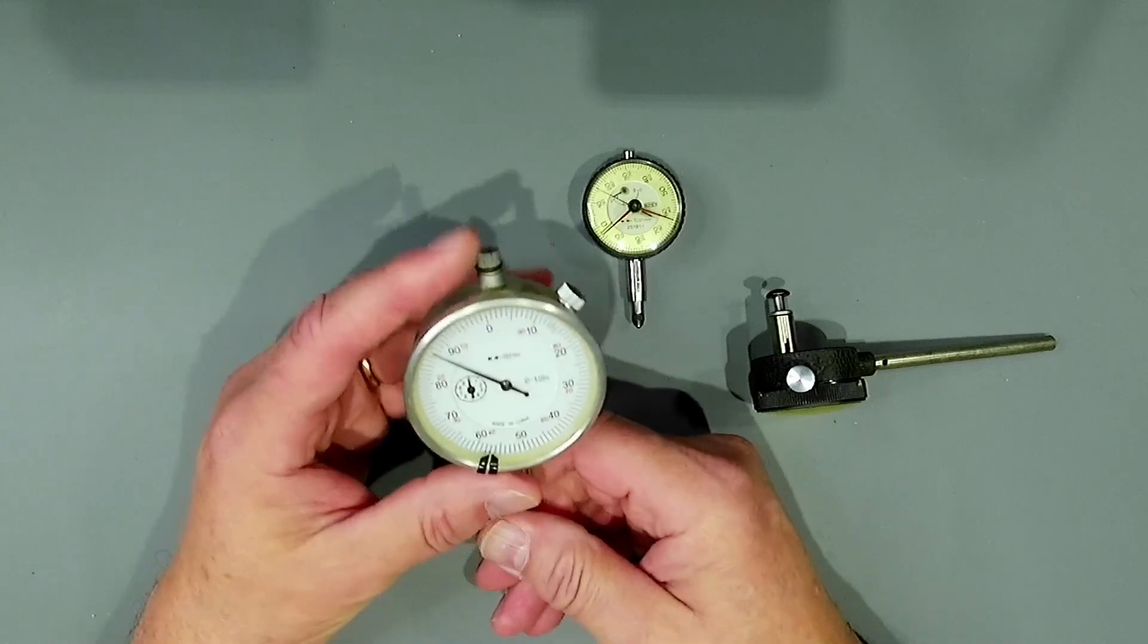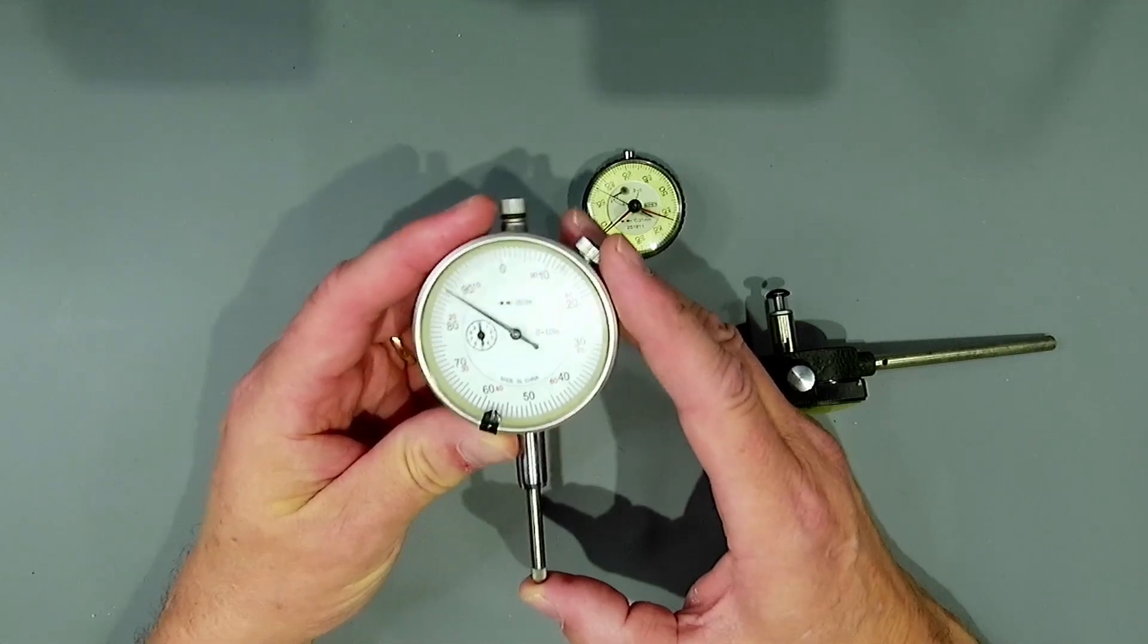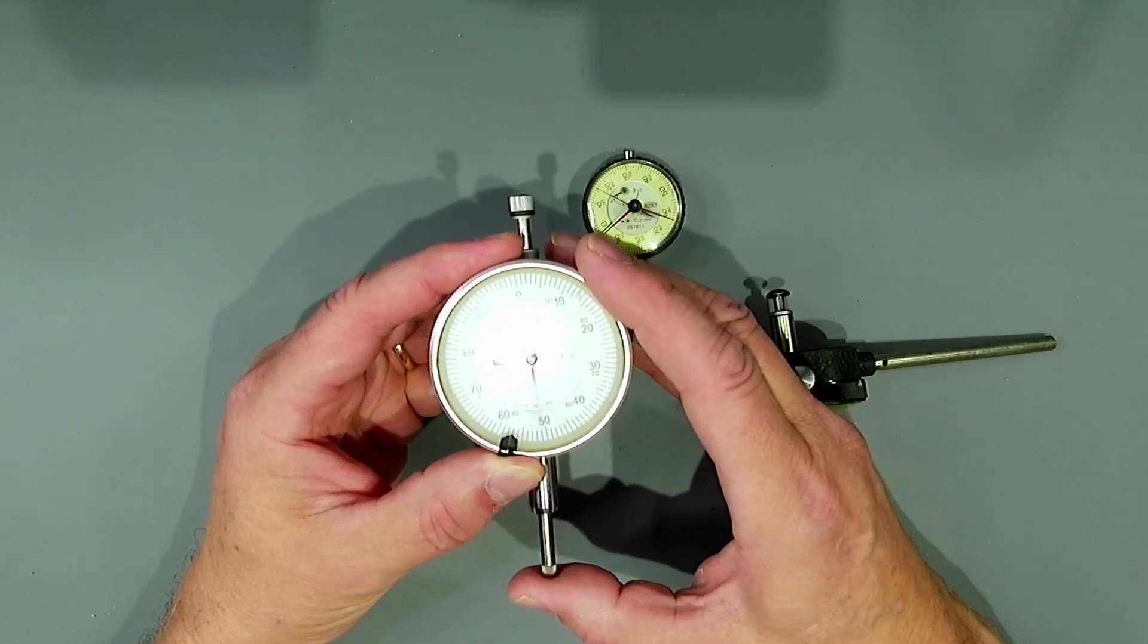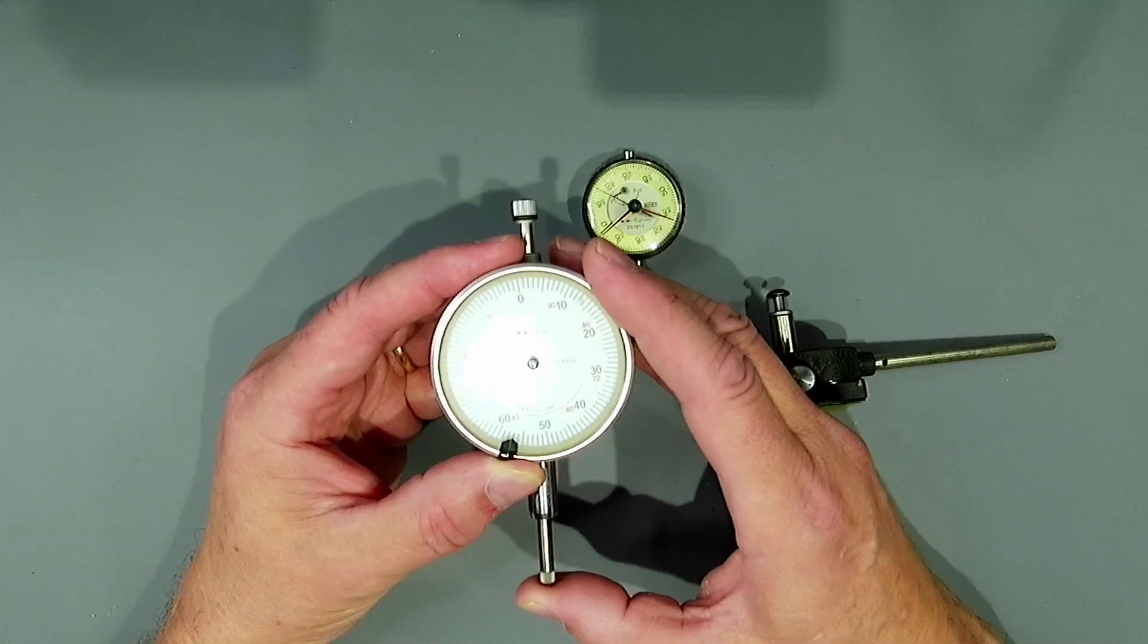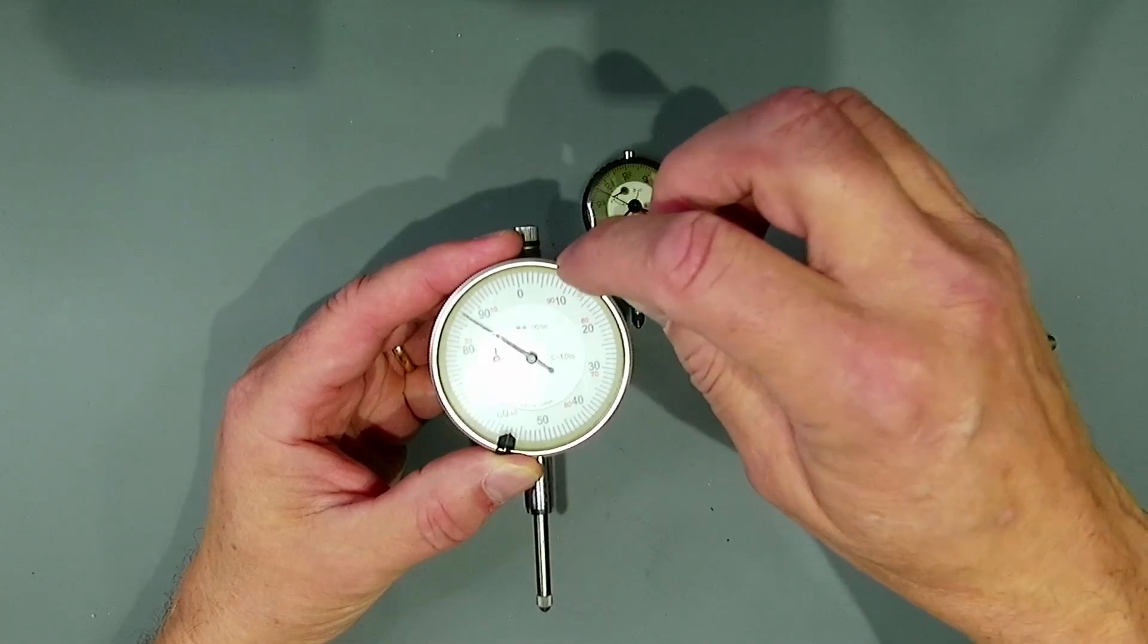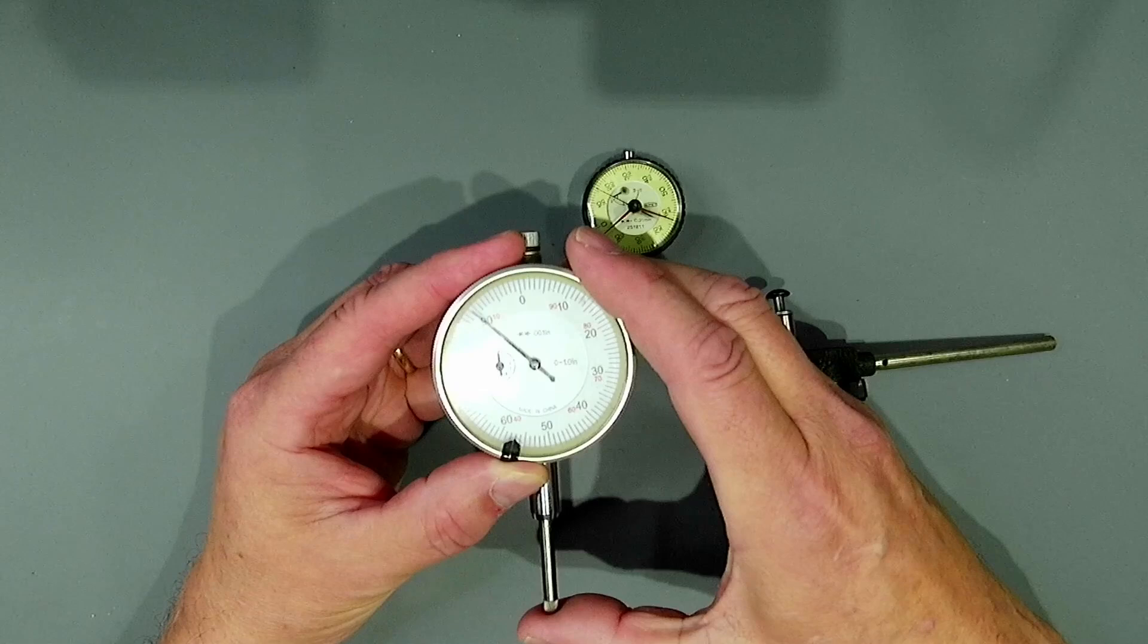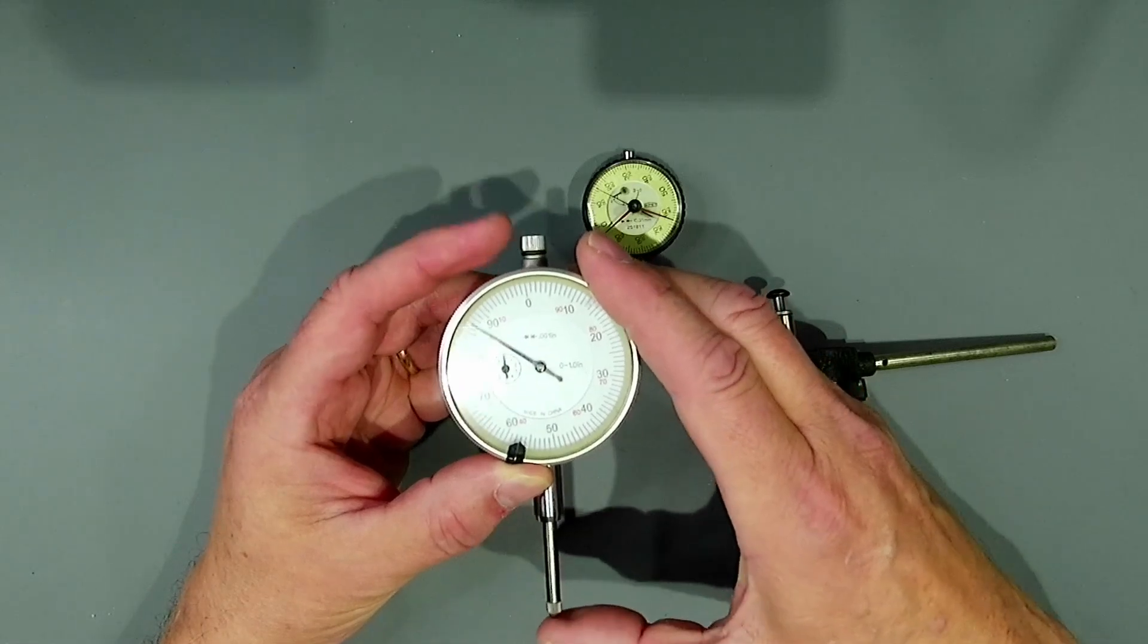Let's take a look at a few defining attributes of a dial indicator. As the name implies, it has a dial with graduations that allow us to read that dimension or amount very easily. In this particular example, you'll notice there are actually two dials. The larger one is graduated in one thousandths of an inch increments, but then there's the smaller dial over here that's counting the revolutions of the larger dial. That's very handy when you're measuring larger objects or features.